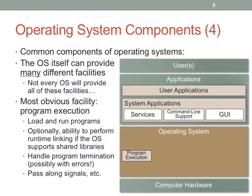Depending on the characteristics of the OS, you may have various facilities as part of program execution. One of the most common nowadays is runtime linking. The program says 'I need these libraries,' and when the person runs it the OS loads that into memory, loads the libraries into the same process address space, and ties the code together so that function calls work correctly. Program termination is also really important, and signals feature prominently here in case a program crashes or something like that.